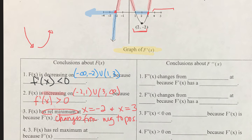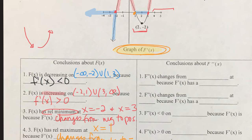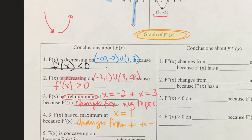f has a relative maximum when f prime changes from positive to negative, and that happens at x = 1. That's where our graph changes from above the x-axis to below the x-axis. Remember, this is the graph of f prime. So when f prime changes from positive to negative, your function is going to have a relative maximum — positive slopes changing to negative slopes.